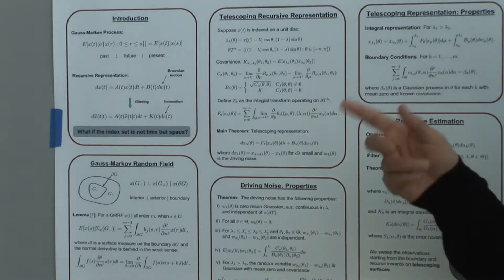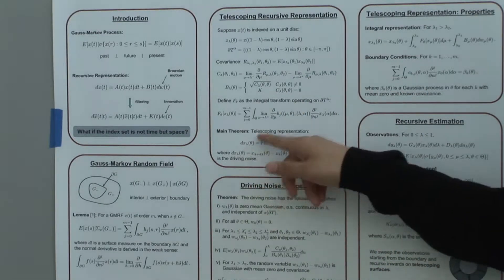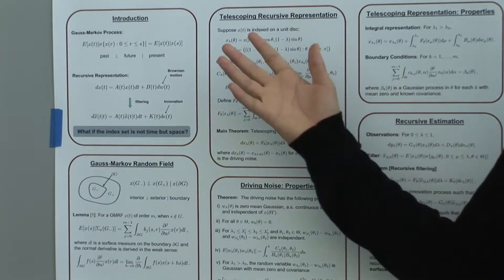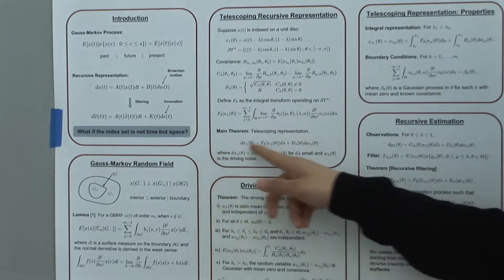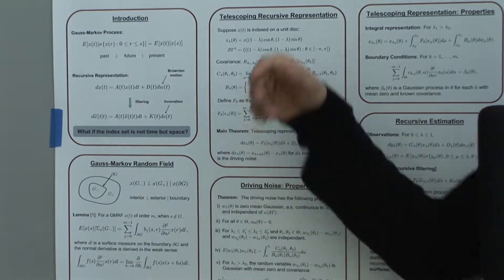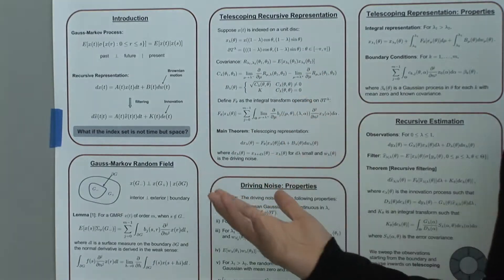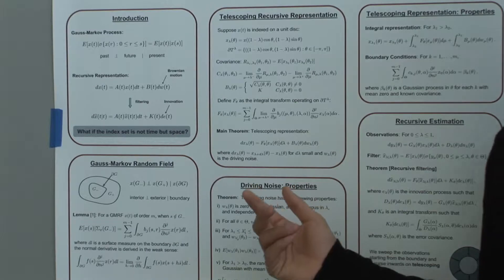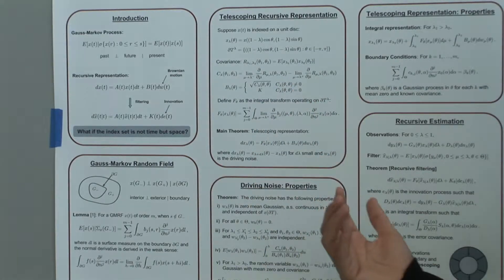the random field, where x lambda theta is the representation of the field in polar coordinates. In some sense, this representation, which we call telescoping, is recursion over the term lambda, which is like the radius of the field. We call it telescoping because it starts at the boundary of